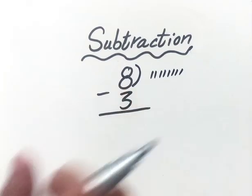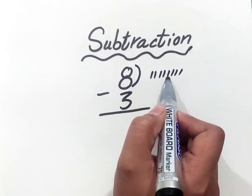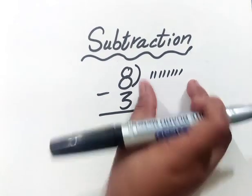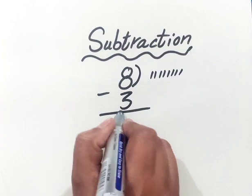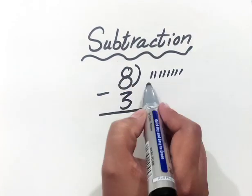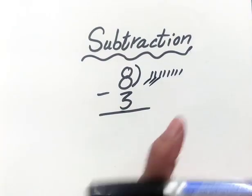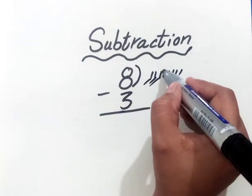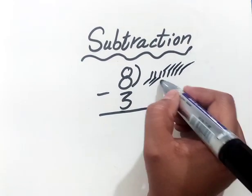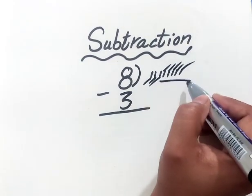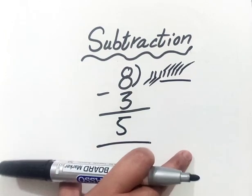Again count them: 1, 2, 3, 4, 5, 6, 7, 8 — these are 8. Now we will take away 3 lines from 8: 1, 2, 3. Now count with me how many are left: 1, 2, 3, 4, 5. How many lines are left? 5. It means 5 is our answer.